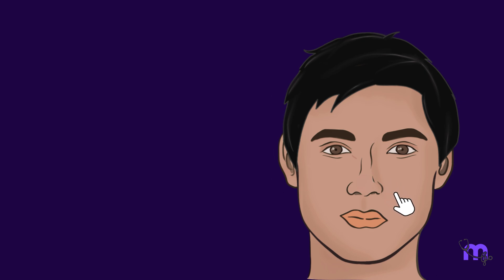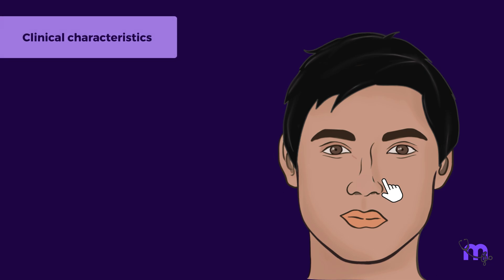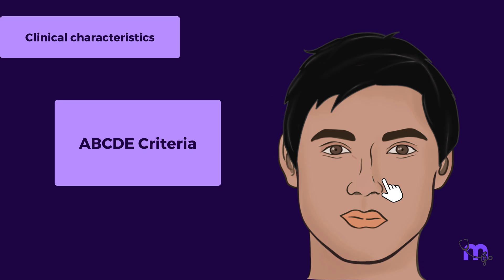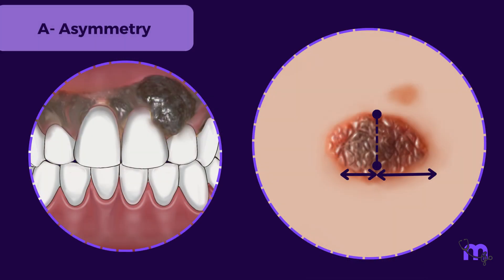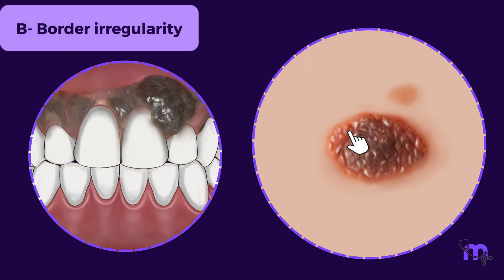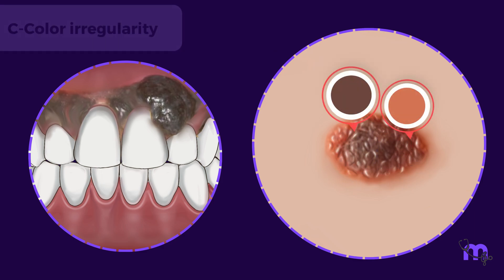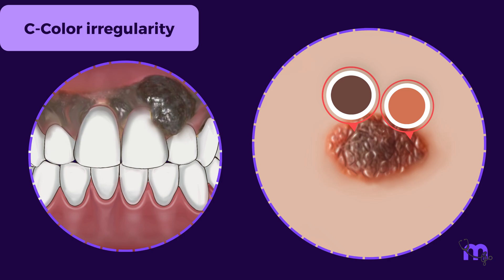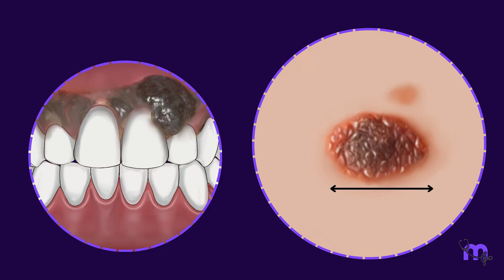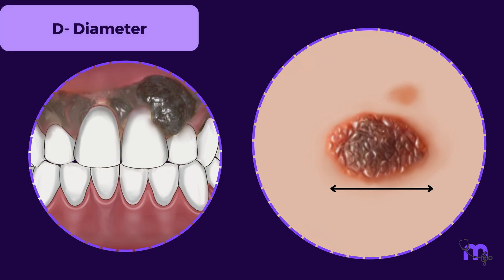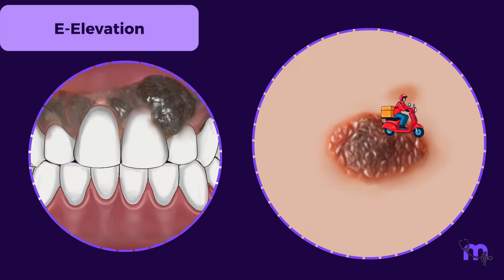On the facial skin, the malar region is a common site for melanoma. The clinical characteristics of cutaneous melanoma are best described by the ABCDE criteria, where A stands for asymmetry, B stands for border irregularity, C stands for colour irregularity, D stands for a diameter greater than 6 mm, and E stands for elevation.